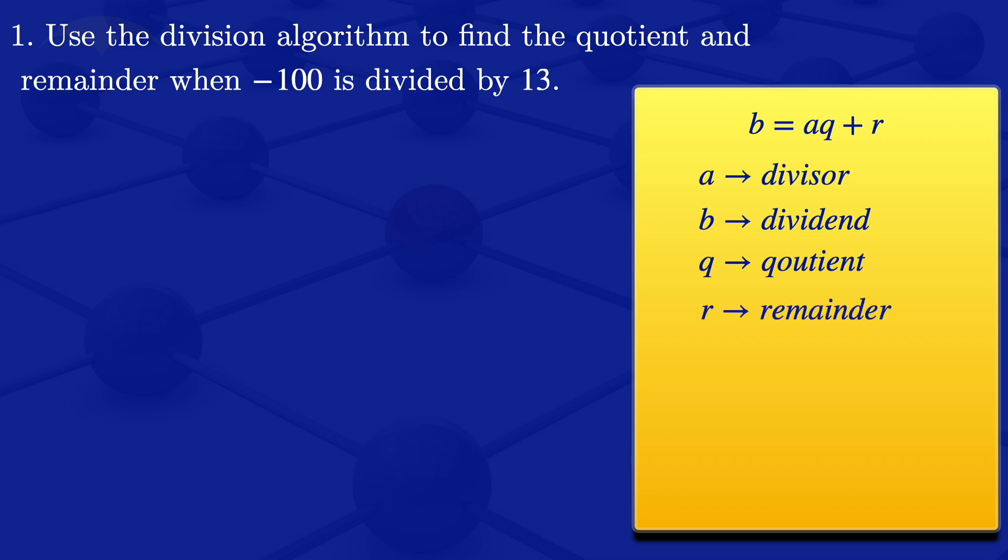The quotient is given by the floor value of B divided by A. The remainder is B minus AQ. So for the first question there, we are having that our divisor is 13 and our dividend is minus 100.